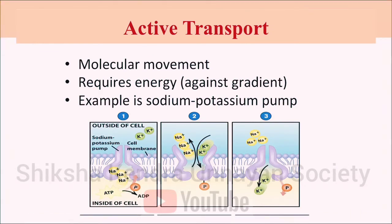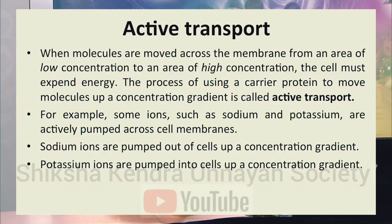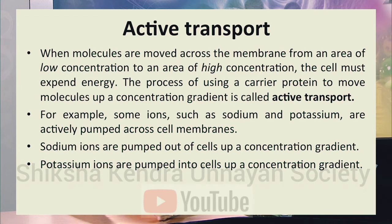Active transport is the process where molecules move from low concentration to higher concentration — against the gradient — which definitely requires the expenditure of energy. The process of using a carrier protein to move molecules up a concentration gradient is called active transport. For example, sodium and potassium ions are actively pumped across the cell membrane: sodium ions are pumped out of the cell up a concentration gradient.